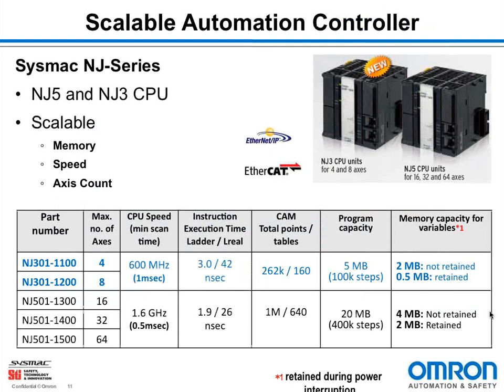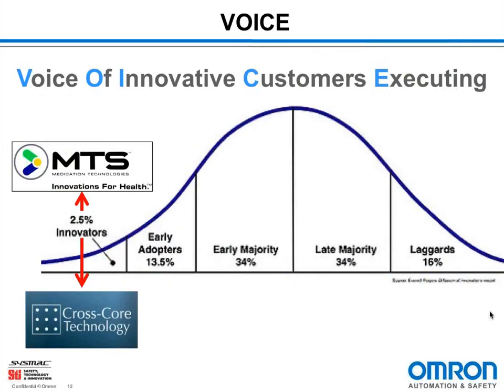We said from the beginning that the NJ-5 was the first of many. We've now come out with the NJ-3 — same form, fit, and function — targeting the mid-level market in the four to eight axes count. What I'd really like to talk about are the pioneers and innovators putting the new technology to test. We're very fortunate today to have both MTS and CrossCore Technologies join us, and we think it's wonderful that these busy OEMs can give us insight into their thoughts on the technology.